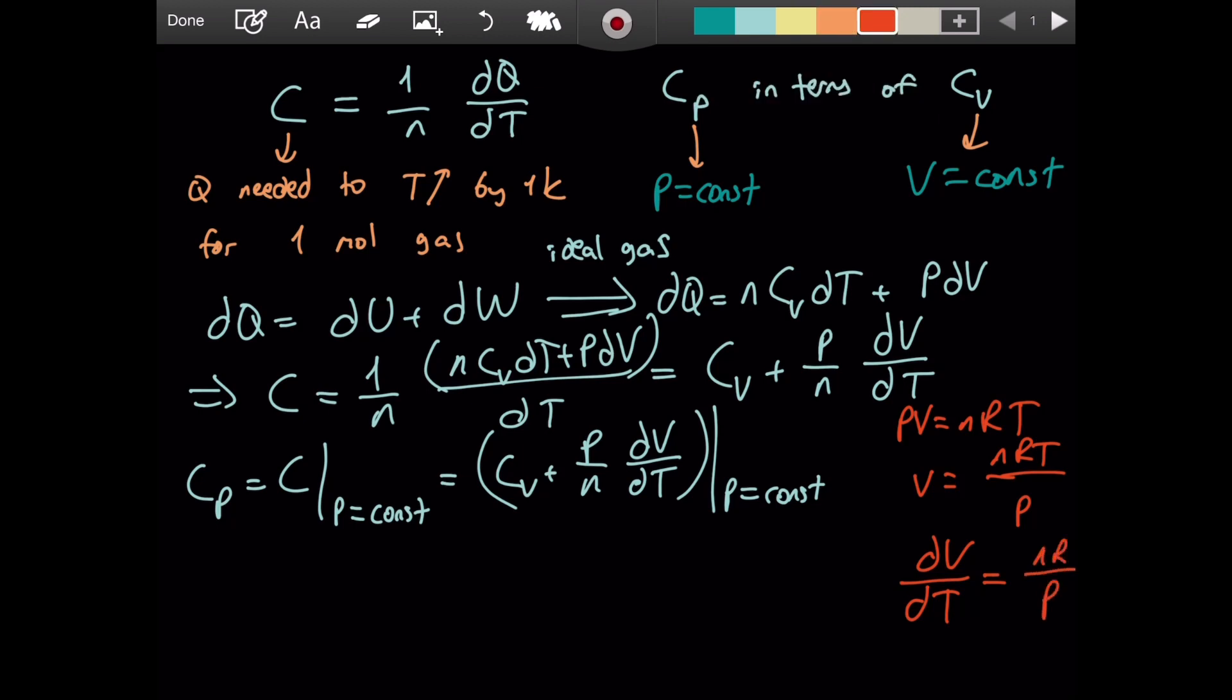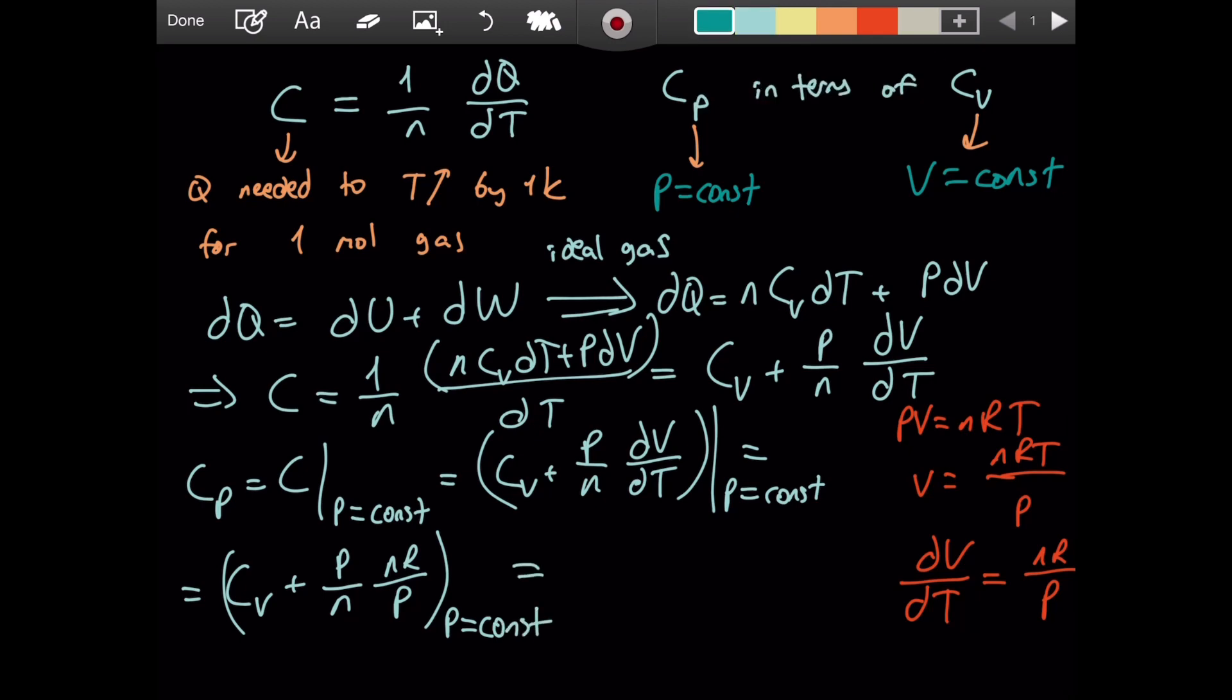So we can substitute it. Let me do it. We have Cv plus p over n. For dv by dt, I will write this, which is nR over p. And would you look at that? The mole numbers, they cancel. The pressure, they cancel. Think about this. It doesn't matter which pressure you're dealing with for the Cp. It's interesting, I think.